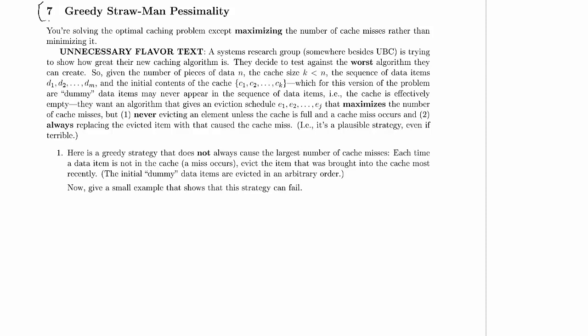And a cache miss occurs. So we don't evict things when there's no cache miss and always replacing the evicted item with what caused the cache miss. So our only real choice is when we really do have to have an eviction of a non-dummy item, which item are we going to get rid of? So plausible strategy but a terrible strategy - we want to give the worst plausible strategy. All right, that's it for the intro to the problem. Next time we will work on part one.